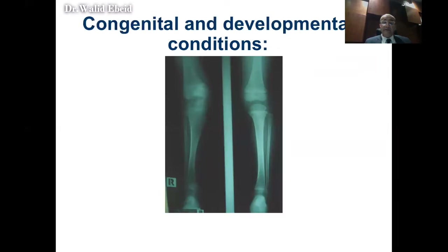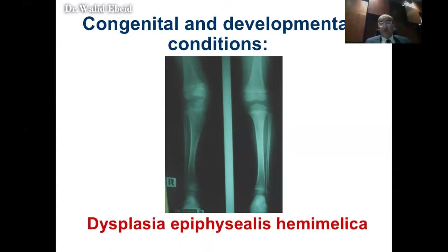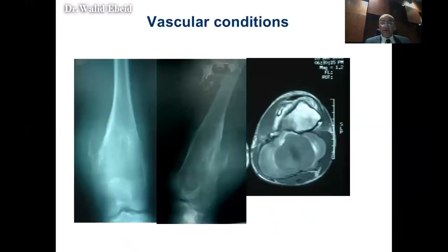If you analyze this x-ray, you'll find there is an abnormal lesion in the epiphysis of the distal femur and proximal tibia. It looks like an exostosis or an osteochondroma of an epiphyseal location, which is very rare. Actually, this turned out to be dysplasia epiphysealis hemimelica — a congenital disorder that mimics a bone tumor. The child presents with a swelling, but this swelling is not due to a tumor; it's due to a developmental condition.